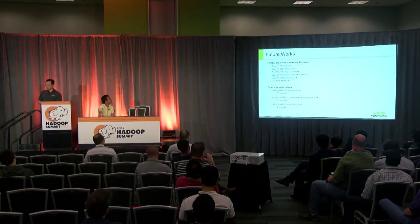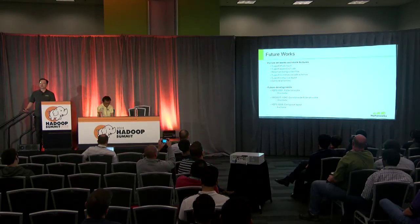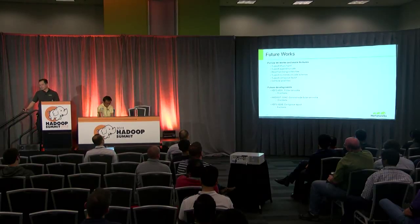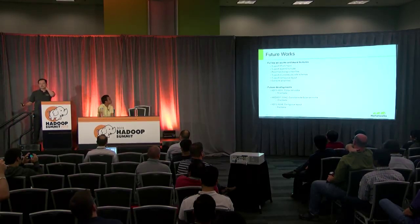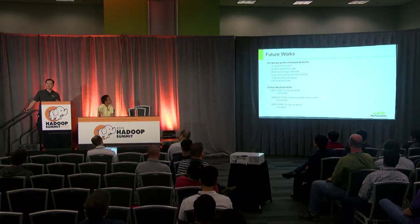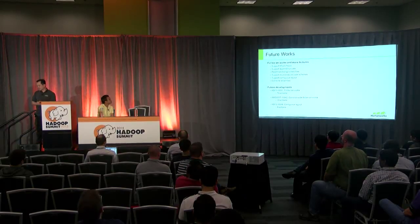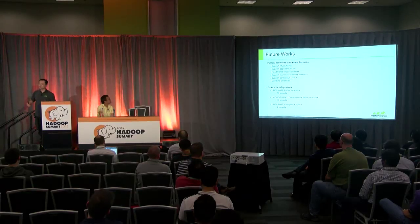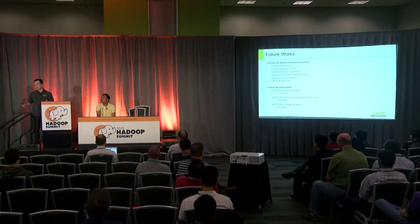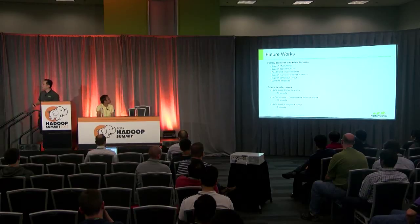For future work, we want to support HFlush and HSync to make this production-ready, and support append and truncate as these are important use cases. With HFlush and HSync support, readers will be able to read up to the HFlush position on a being-written file. We also want to support more schemas as mentioned, and later support a contiguous layout — where we can combine small files and encode multiple files together.